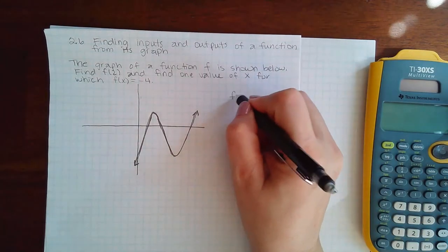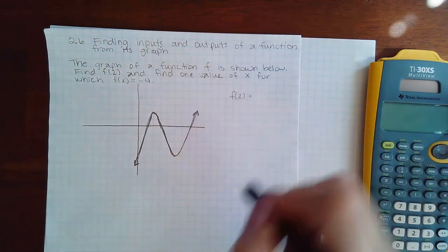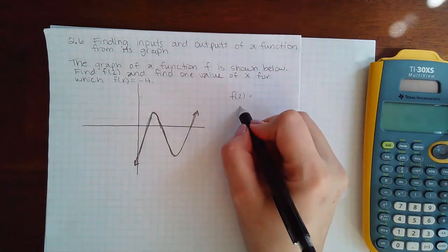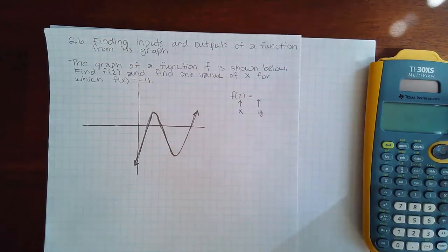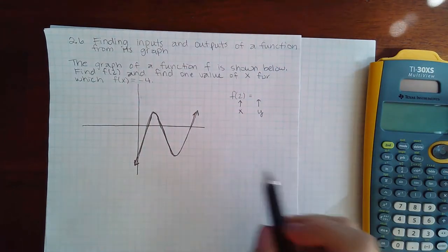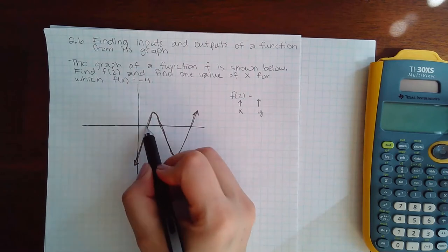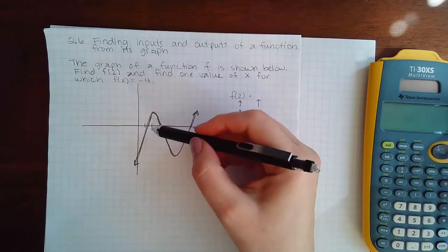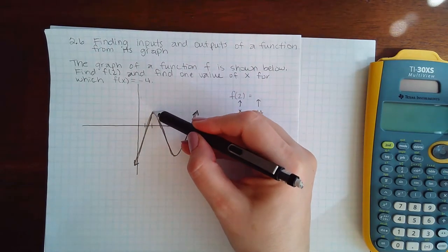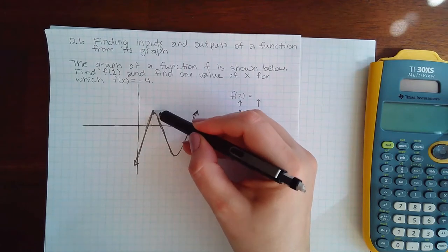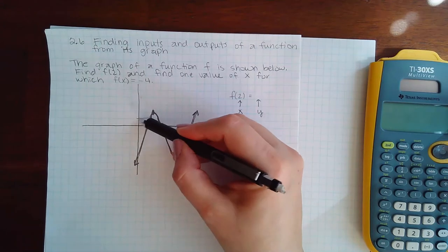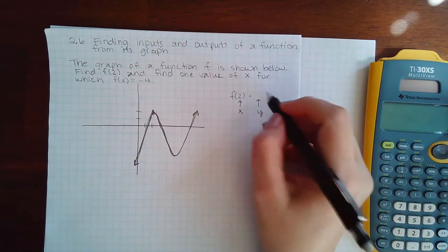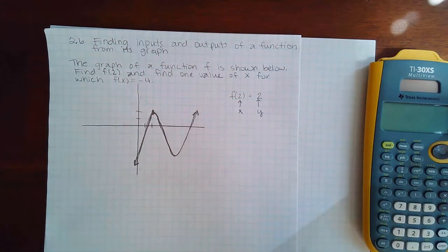So f of 2 we've actually just completed. That means they've given me the x value and they want to know what the y value is. So I'm going to go over to where x is equal to 2 and the graph seems to be up here. So the point they're asking about is right there. Now I know the x value of this point. What I want to know is what is the y value of that point and it happens to also be 2.